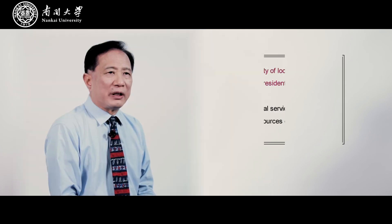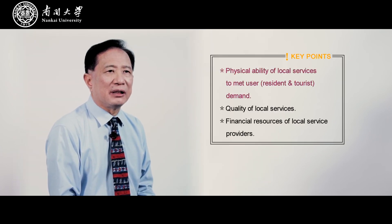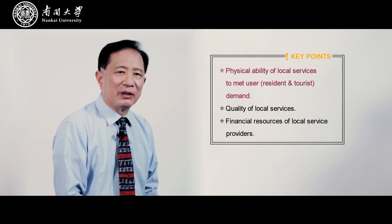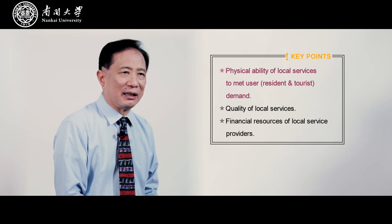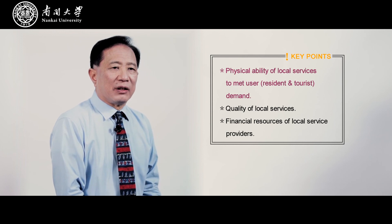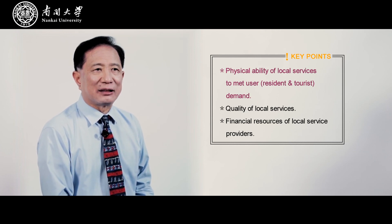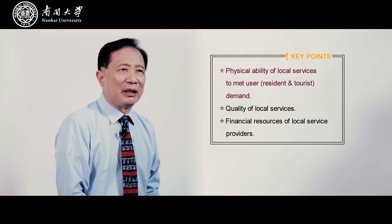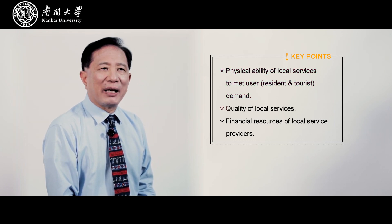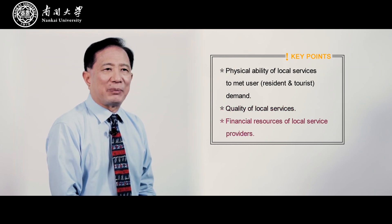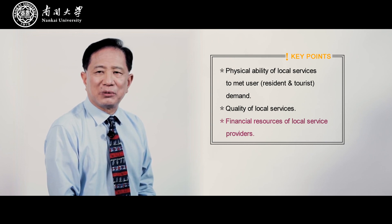The second of these special types of impacts is the service impact. This relates to the physical ability of local services to meet user demand. Tourists come to a community and destination, they throw out their rubbish and trash — someone's got to clean it up. Who cleans it up and who pays for it? It's the local resident. If there are too many tourists, it may affect the quality of local services and impact upon the financial resources of the local service provider.